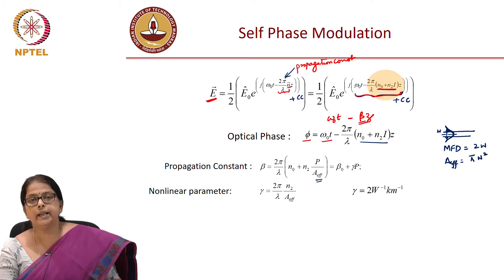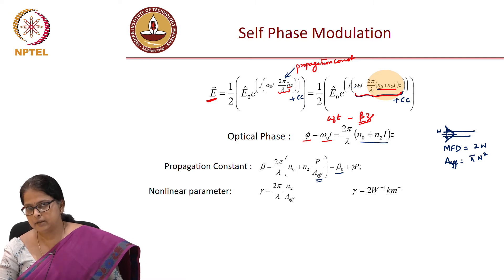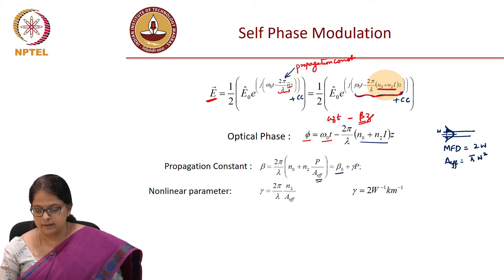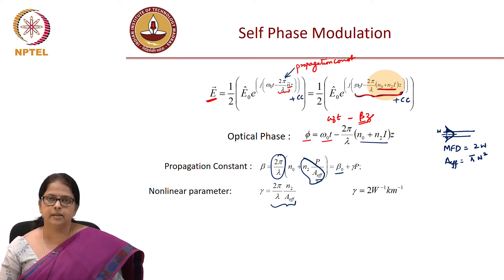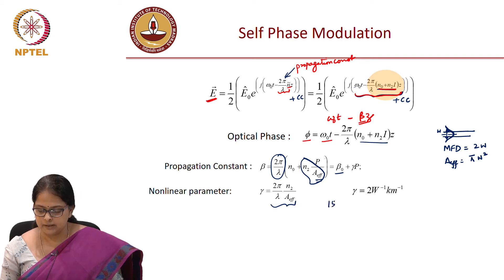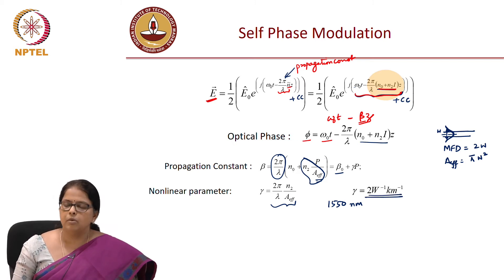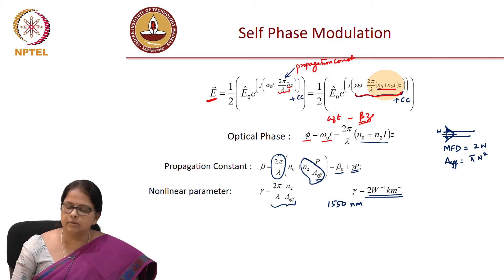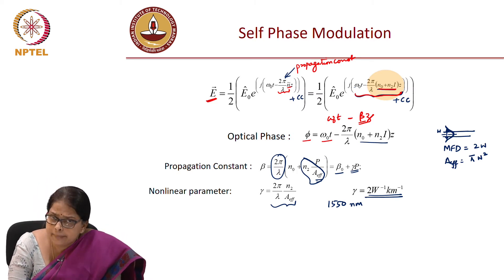We can represent β as β₀ (the linear part, without χ₃) plus γP, where γ = (2π/λ) · N₂/A_eff. For a standard single-mode fiber at 1550 nm, substituting the effective area of the fundamental mode, γ turns out to be 2 W⁻¹km⁻¹. This number is useful because it gives an idea of the magnitude of the phase accumulated due to the nonlinear part of the refractive index.